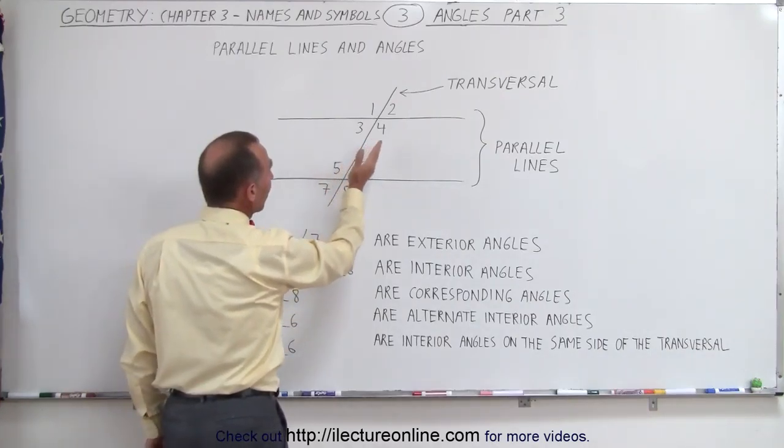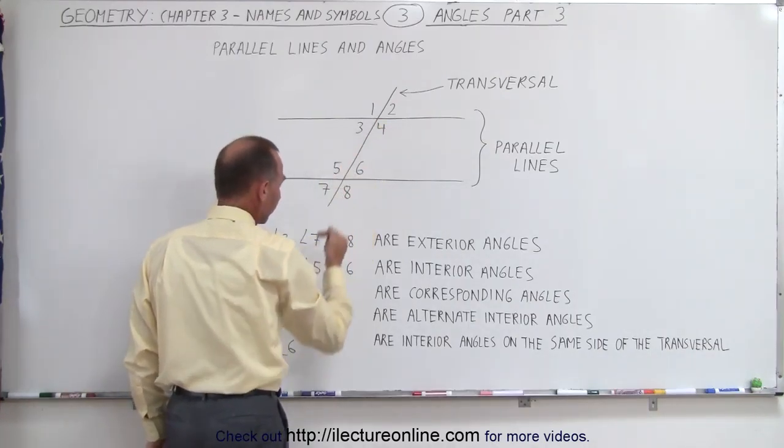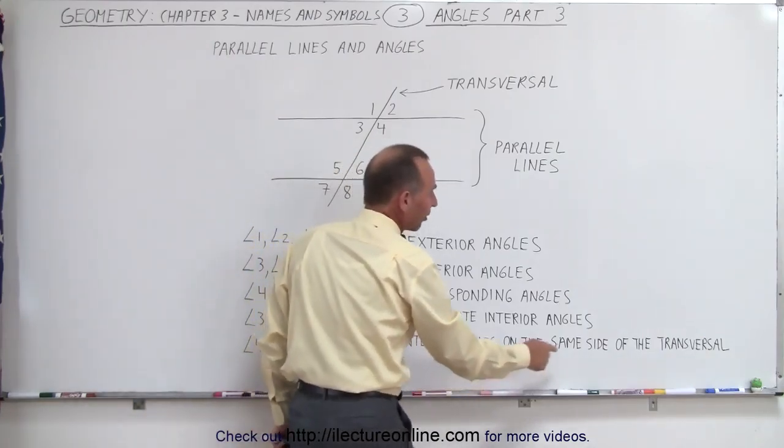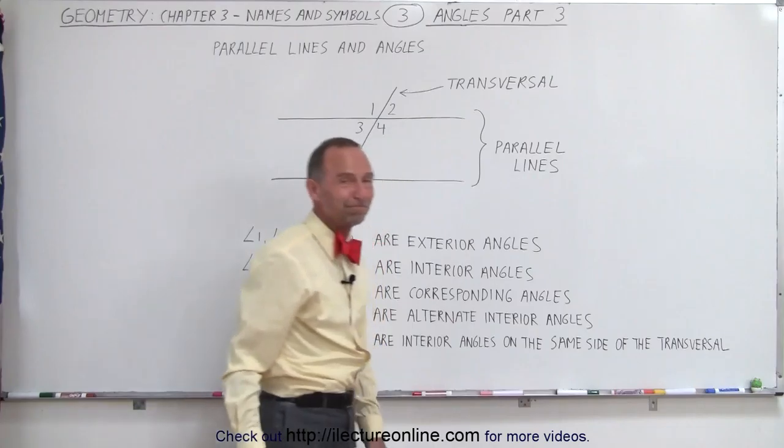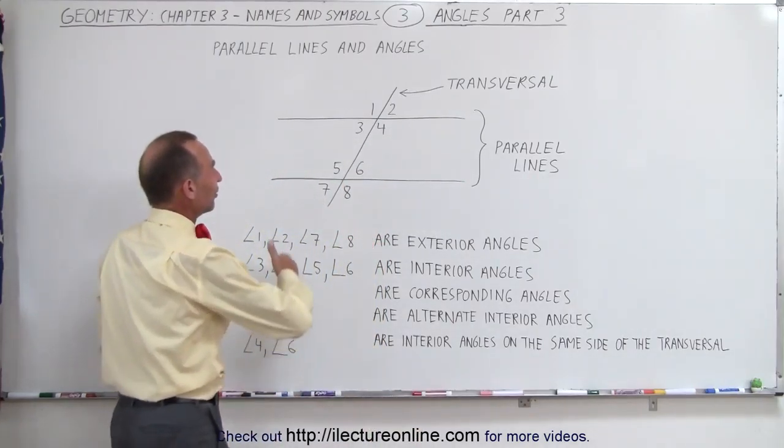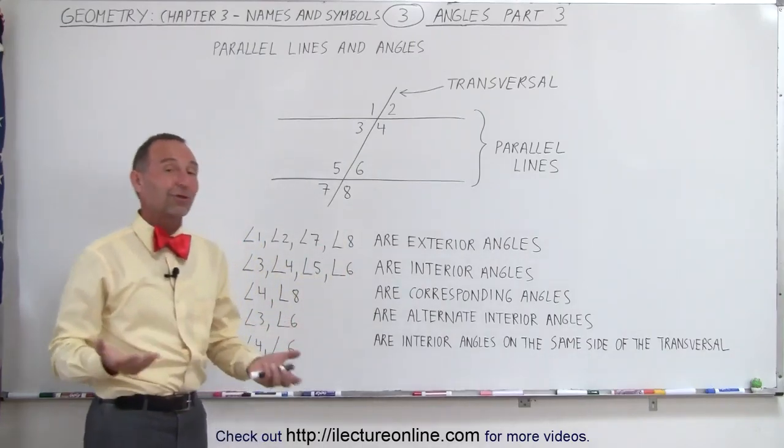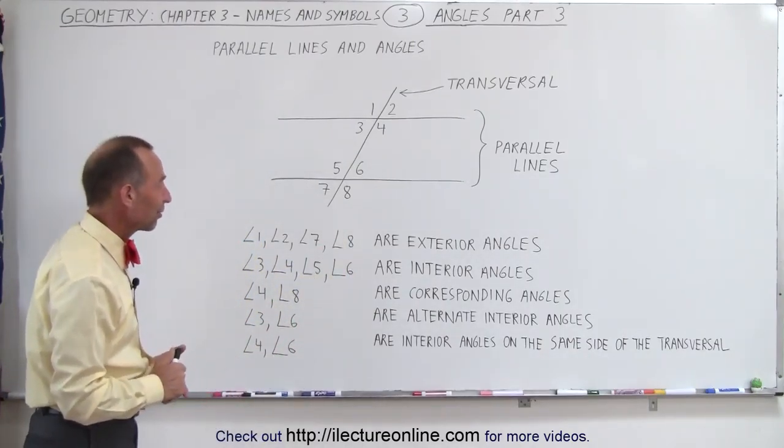They're on the same side as the transversal. They're interior angles. So four and six are called interior angles on the same side of the transversal. That seems straightforward enough. They're interior angles. They're on the same side of the transversal. So we just call them interior angles on the same side of the transversal.